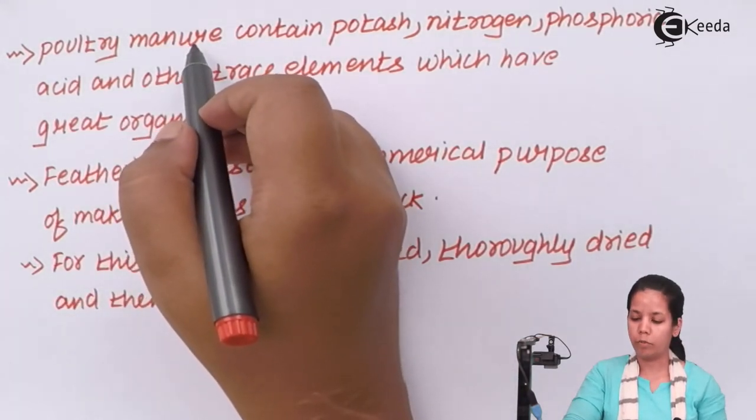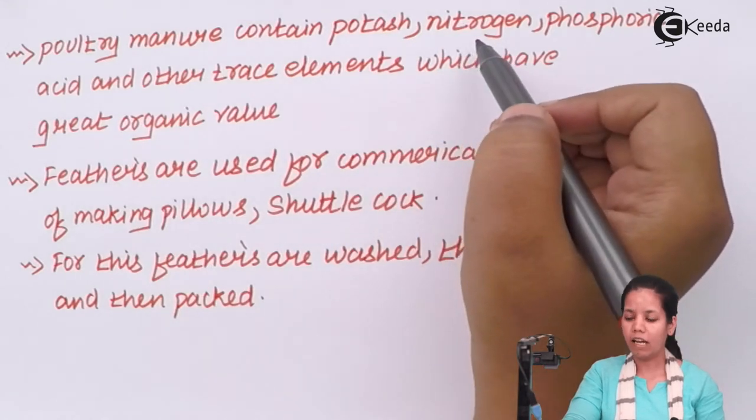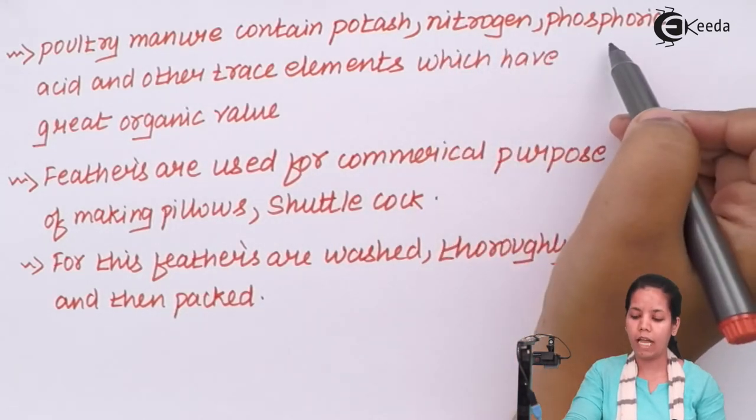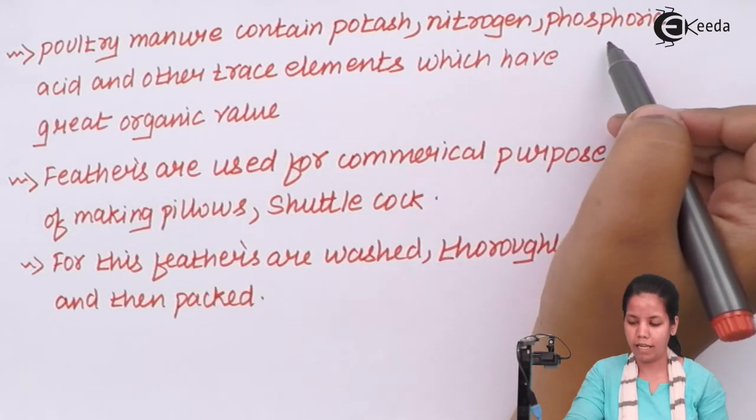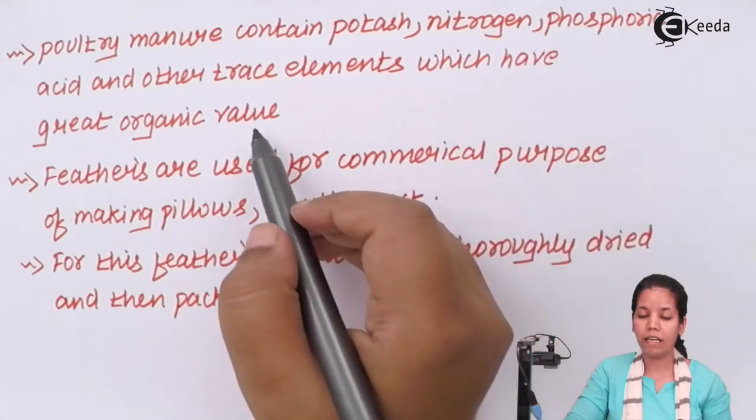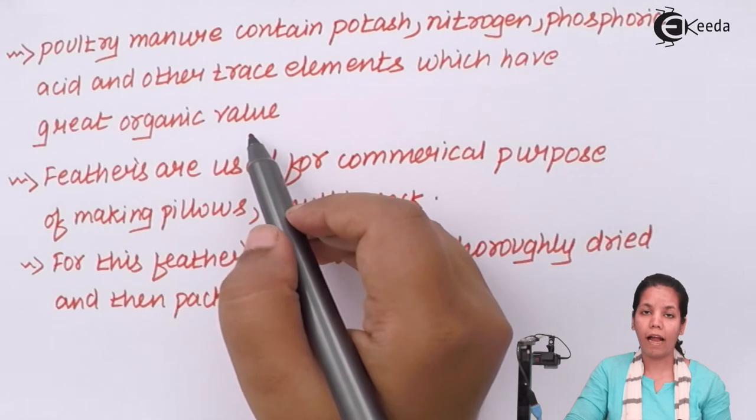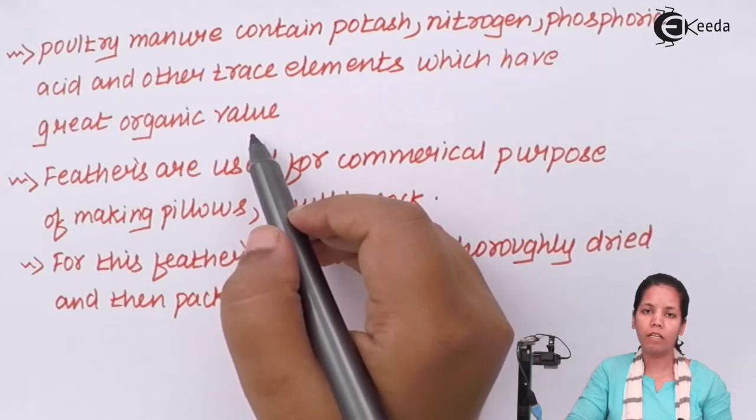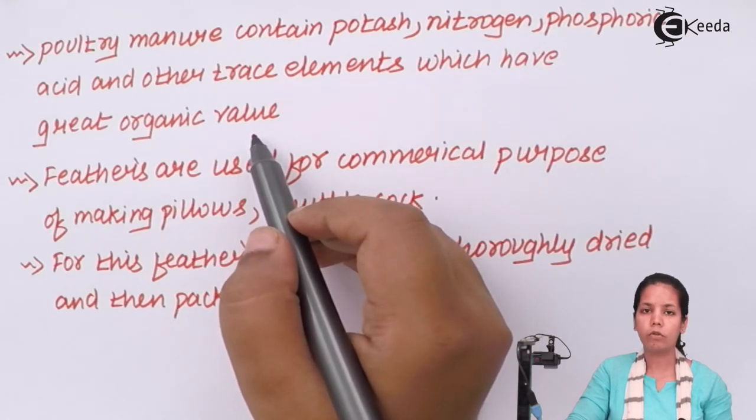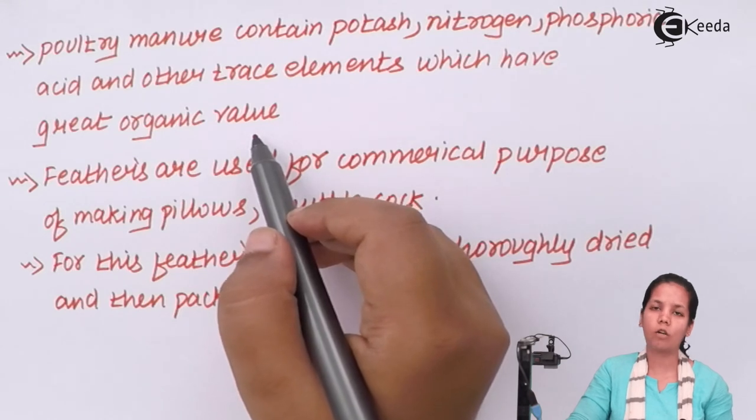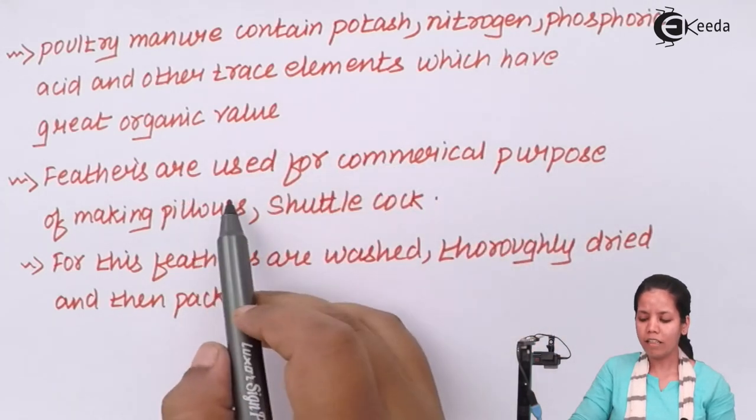Poultry manure is one of the crucial poultry products that contains a large amount of potash nitrogen phosphoric acid and other trace elements which have great organic value or act as a good fertilizer or manure without the use of chemical fertilizers like urea or ammonia they could give nutrition quality or nutritive value to the field and the crop itself.